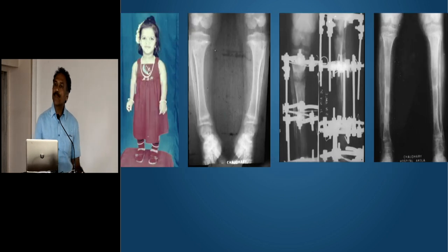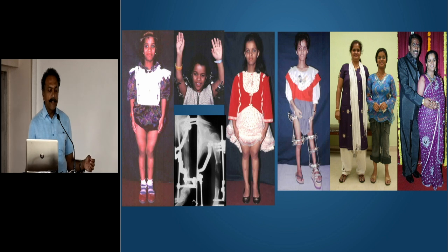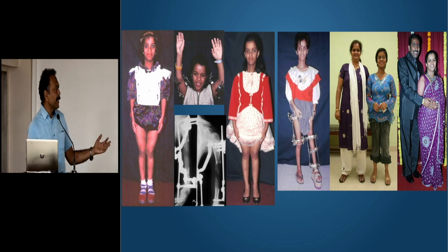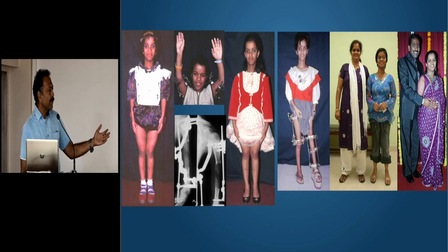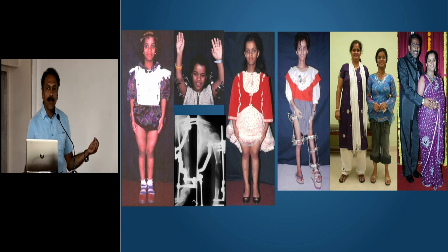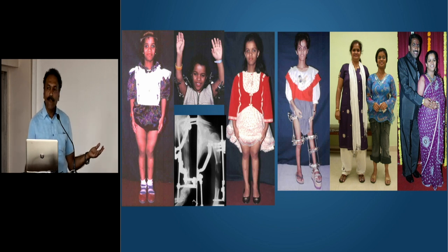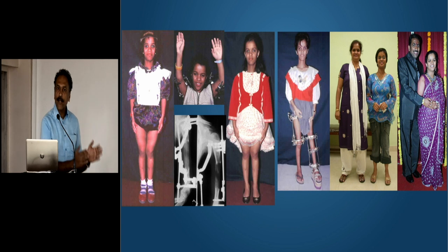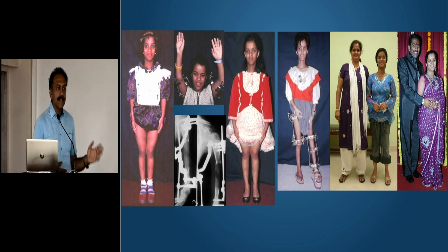A young achondroplastic dwarf starts treatment at the age of four years, gets 11 centimeters in her tibia, lengthening of her humeri to restore upper and lower body proportions, then cross-lengthening so that by the time she is 22 years of age, she is four foot ten. She has married the love of her life and leads life not as an achondroplastic dwarf who is ostracized in society, but as someone who leads a life of love and respect.